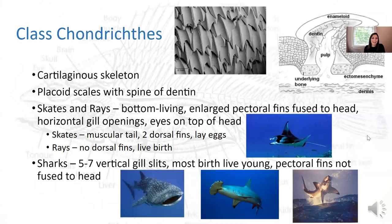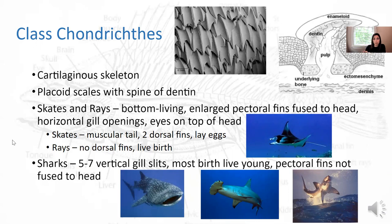Skates and rays are bottom-living. They have enlarged pectoral fins fused to their head, making them look like they have wings. They have horizontal gill openings and eyes on top of their head because they're so flattened. The difference between skates and rays: skates have a muscular tail and two dorsal fins, and they lay eggs, whereas rays don't have dorsal fins and give live birth. For example, a manta ray has a non-muscular tail and no dorsal fins.